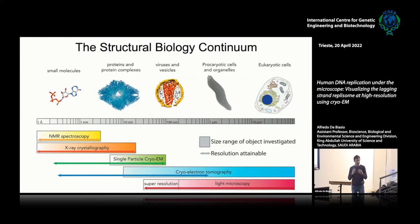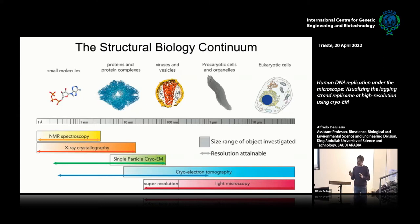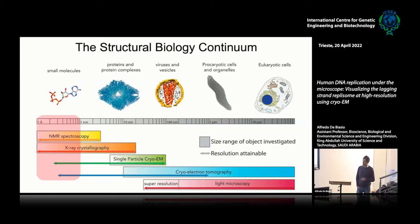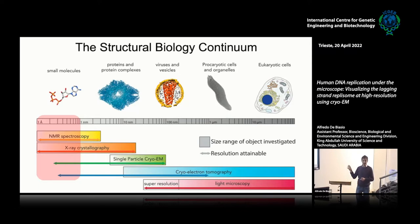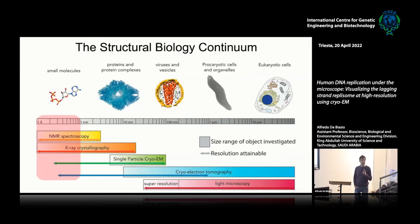In order to achieve atomic resolution details of a biological structure, we need tools able to resolve details at the order of chemical bonds — that is, between two and three angstroms. Historically, the two main techniques able to provide such resolution have been NMR spectroscopy and X-ray crystallography. More recently, single particle CryoEM and now Cryoelectron tomography are added to the tools that can be used for structural determination at atomic resolution, with great advantages.